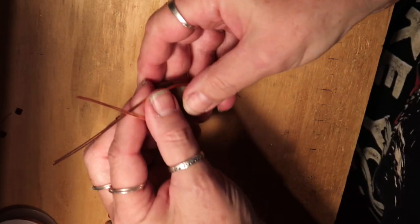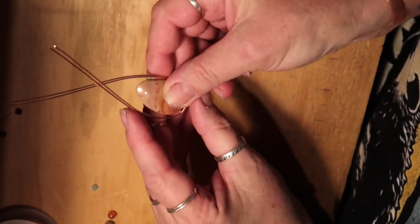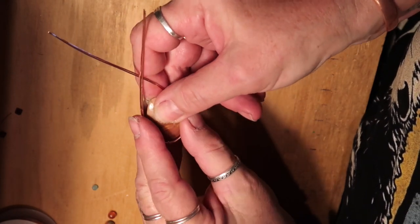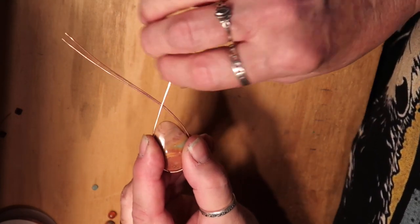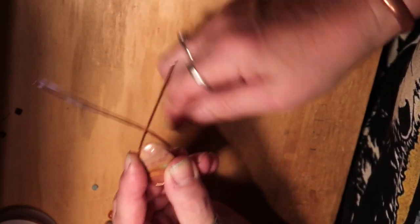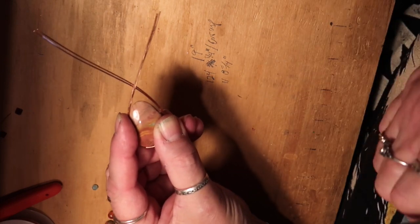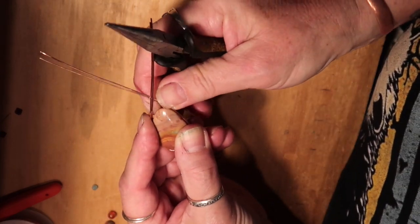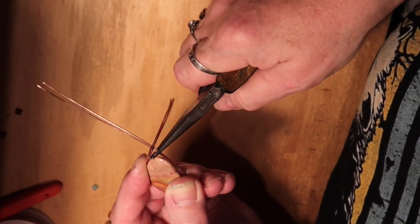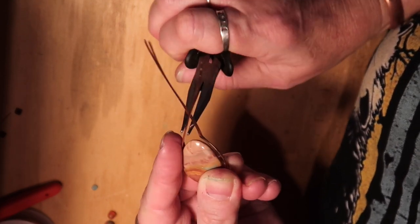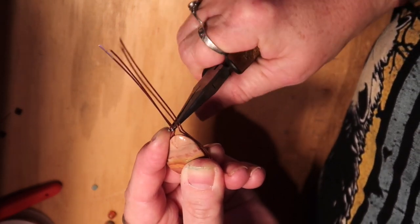So now that I have got that bent around there a little bit, what I need to do is find out where my bail is going to be. And so for my bail, I'm going to bring these around to the top and then take my chain nose pliers and bring it around, bring it up.